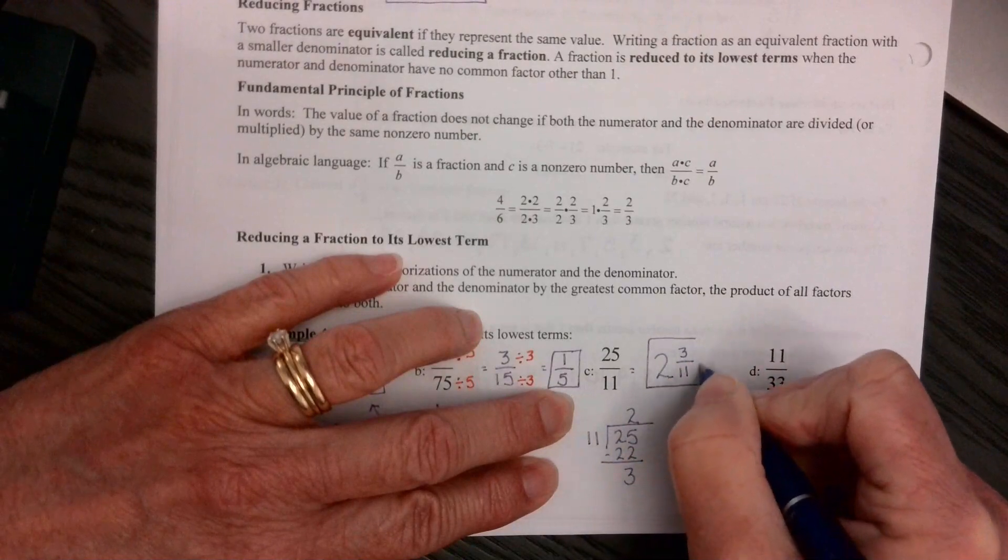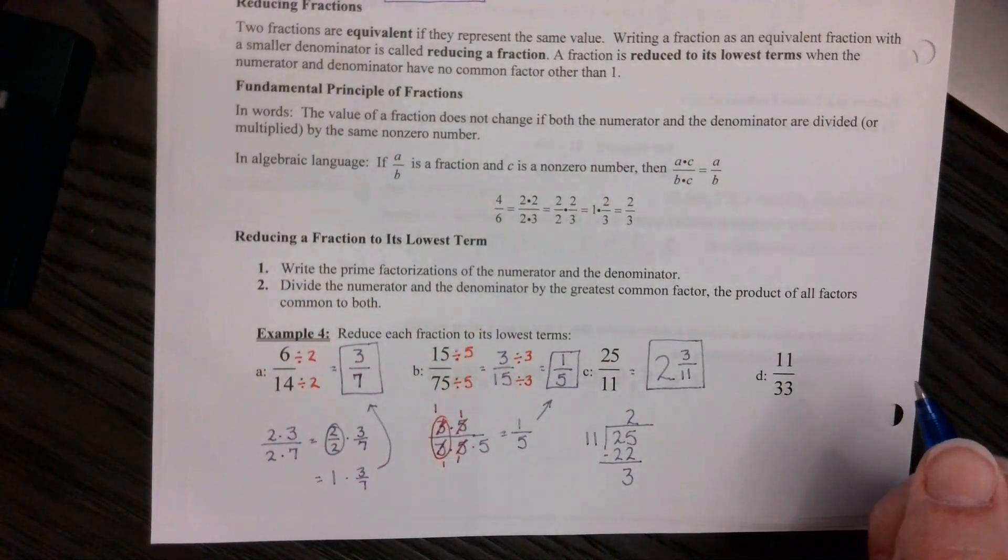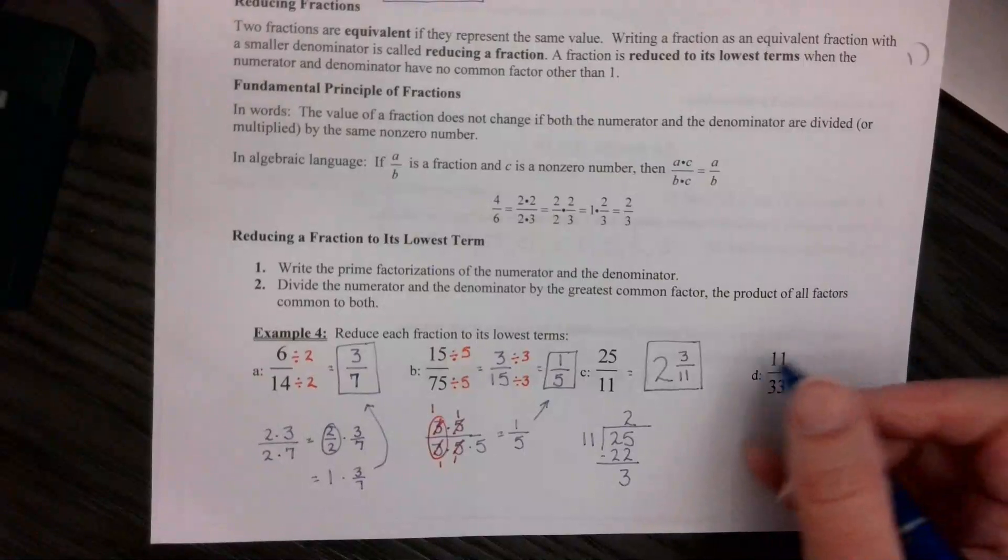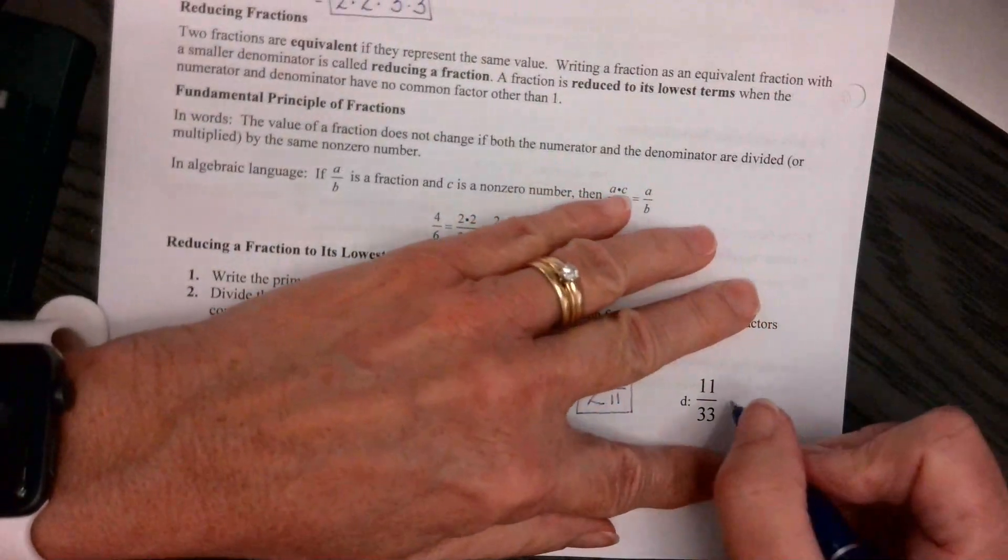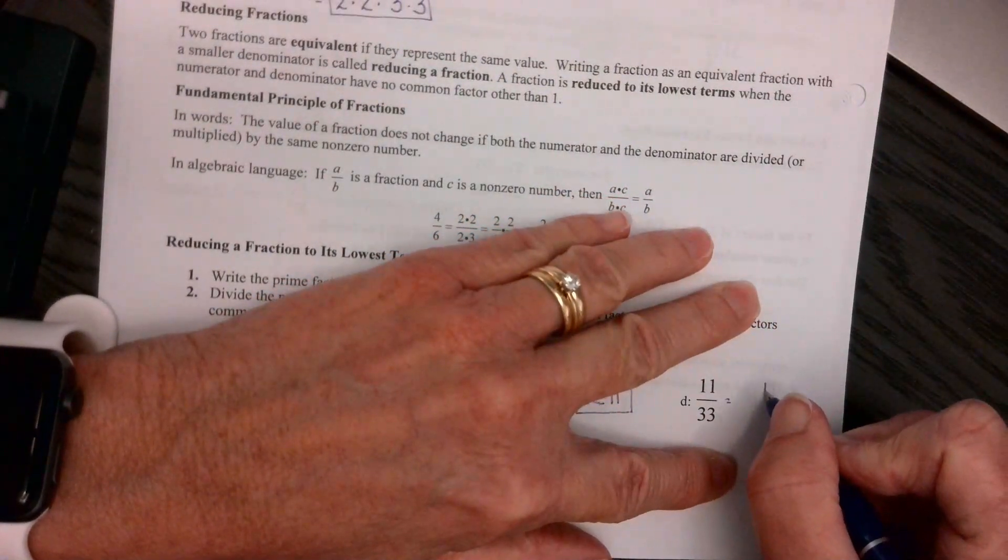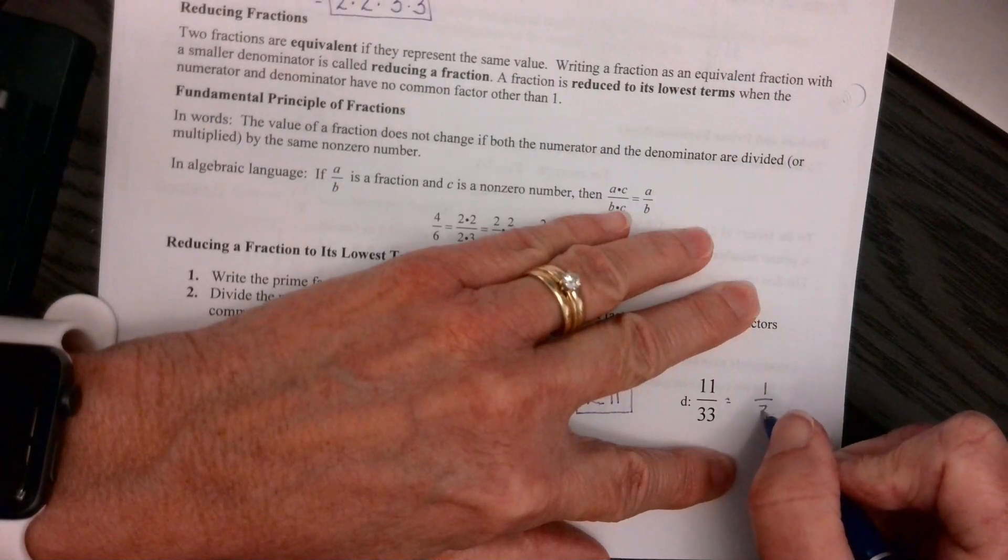And you really just have to pay attention to your instructions. Right here, I can reduce both the top and the bottom by 11. The top gives us 1, and the bottom will give us 3.